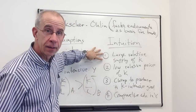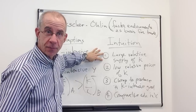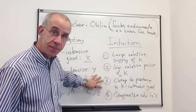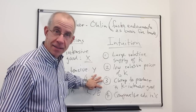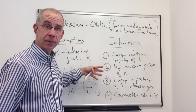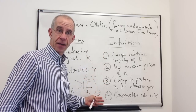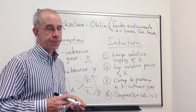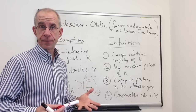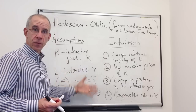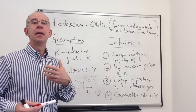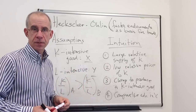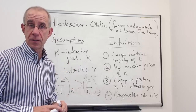The basic intuition is: if you have a large endowment of a factor, it's going to make that factor cheap. It's then going to be cheap to produce goods that intensively use that abundant factor. And if that's the case, you will have a comparative advantage in that good, which opens up the possibilities for mutually beneficial trade. This is the basic overview and intuition about Heckscher-Ohlin. In subsequent videos, we'll really lay out the particulars of this model, but here are the basic assumptions and intuitions associated with it.